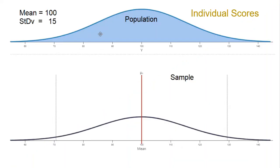Here's a population of individual scores. The mean is 100 and the standard deviation is 15. Below it is a sample.